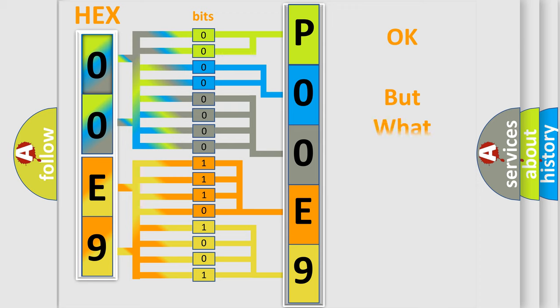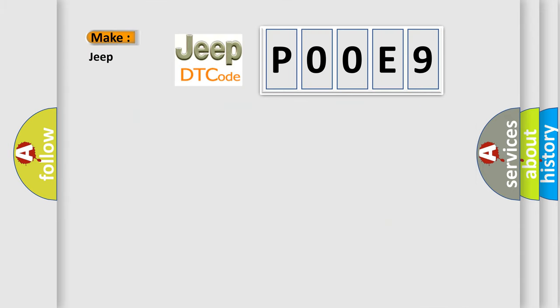The number itself does not make sense to us if we cannot assign information about what it actually expresses. So, what does the diagnostic trouble code P00E9 interpret specifically for Jeep car manufacturers?